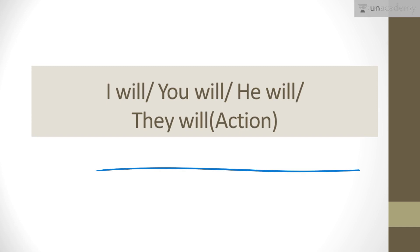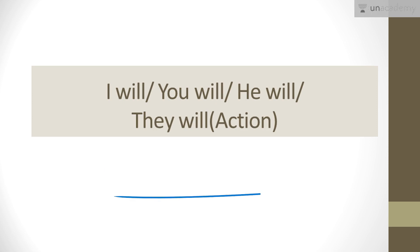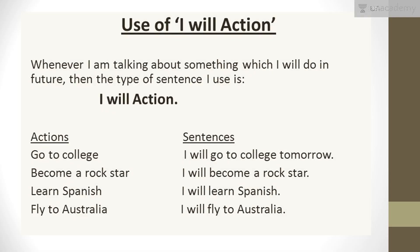Starting off with a new topic — a new type of sentences: I will, you will, he will, they will, followed by an action. I would like to tell you that this is the simplest type of sentences we have talked about till now. We have covered 'I am + action + ing', 'I have + action third form', and two more. But this is the simplest: I will action, you will action, he will action, she will action, they will action, we will action. That's all about this type of statements.